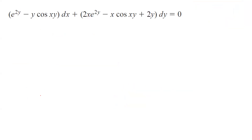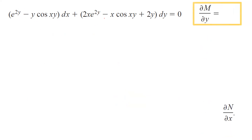Another example: M is 2e^(2y) − y·cos(xy) and N is 2x·e^(2y) − x·cos(xy) + 2y, with the equation set equal to 0. We're going to check whether this is an exact differential equation by taking the partial derivative of M with respect to y and checking if it equals the partial derivative of N with respect to x.